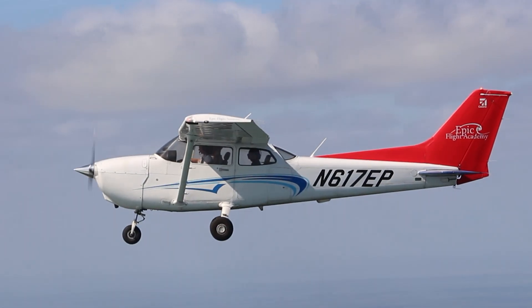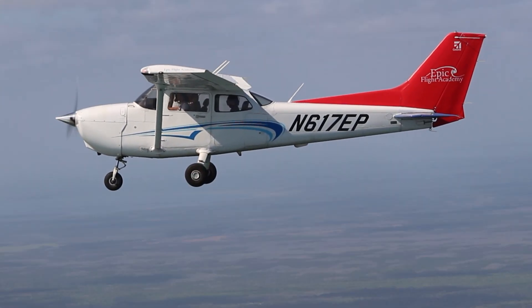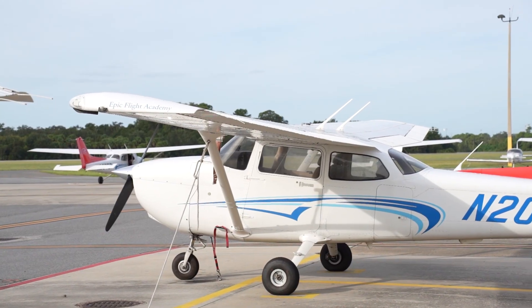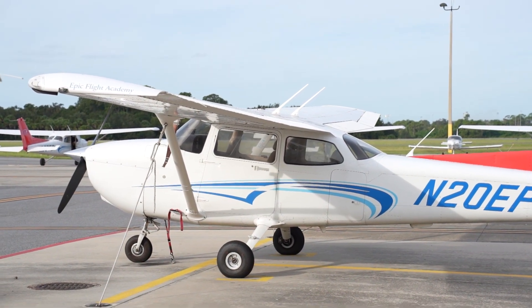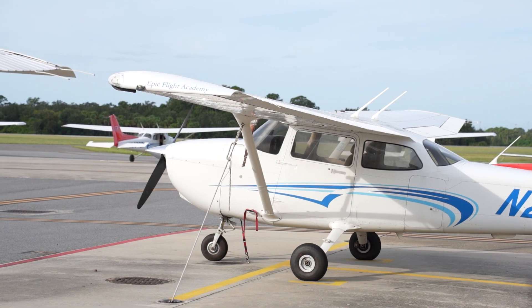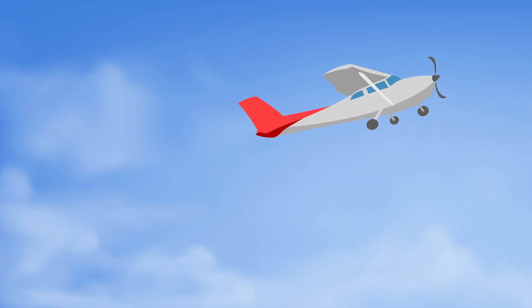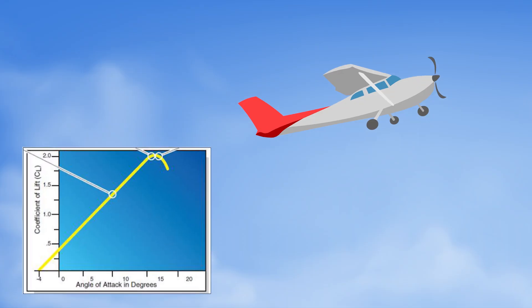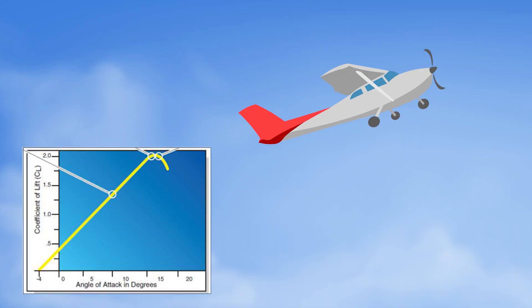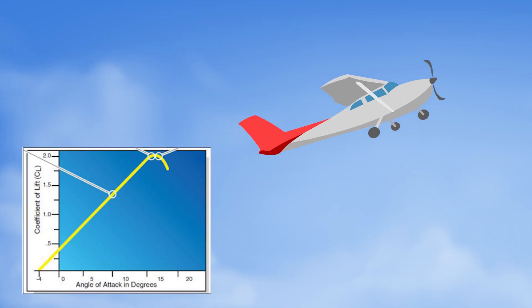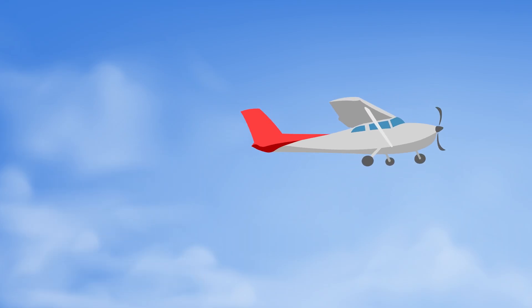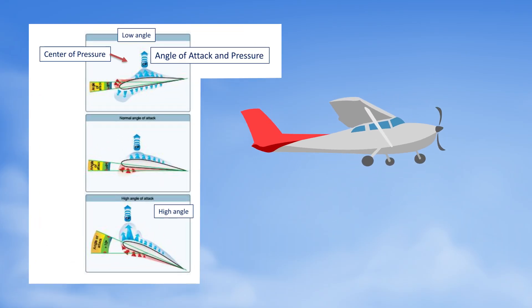Let's look at how angle of attack influences the aerodynamic forces on an airplane. As angle of attack increases, lift also increases, but only up to a point. Once the wing reaches the critical angle, the smooth or laminar airflow separates, lift suddenly decreases, and a stall occurs. The changing angle also affects the center of pressure — the shifting point along the wing where aerodynamic forces act — which can alter stability in flight.